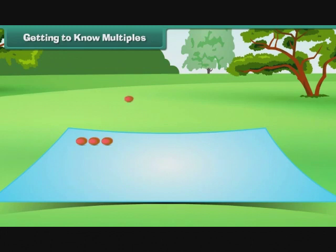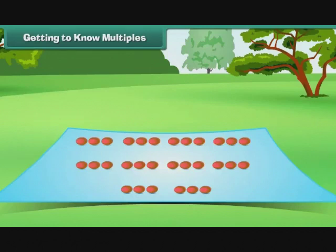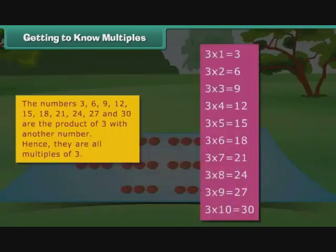Miss Rita points to another student. She recalls that 3 times 2 is 6 and places 6 pebbles on the hanky in front of her. This process is repeated till the 10th student places 30 pebbles. The numbers 3, 6, 9, 12, 15, 18, 21, 24, 27 and 30 are the product of 3 with another number. Hence, they are all multiples of 3.